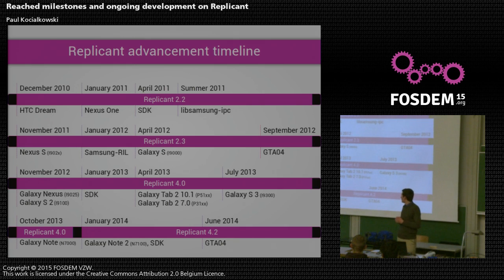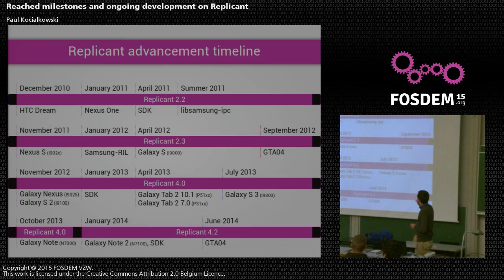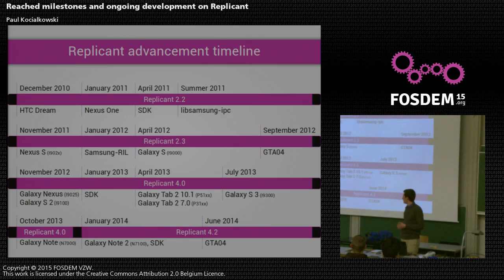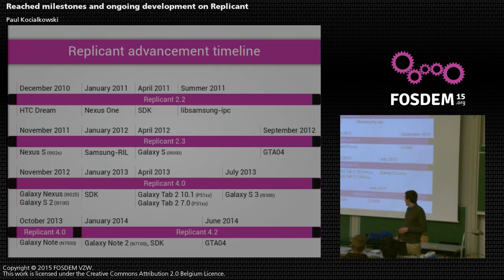Then we worked on Samsung RIL, added support for the Galaxy S, then the GTA04 — a very interesting device I'll mention further. We started adding support for it in September 2012, but I kind of gave up midway. Back in June 2014, I started working on it again, which I'll detail in a bit. Along the way, we added support for new versions of Android — from 2.2 to 2.3 to 4.0 to 4.2 — each time adding new devices. At this point we support 10, 11, or 12 different devices.